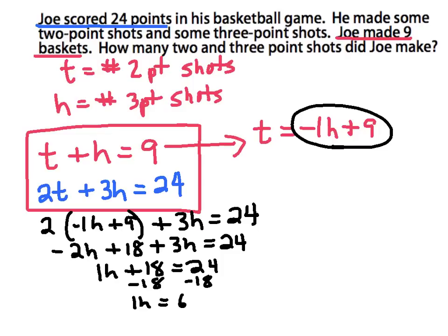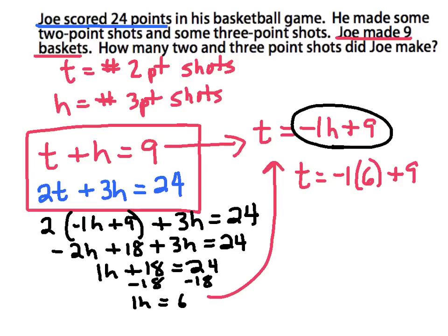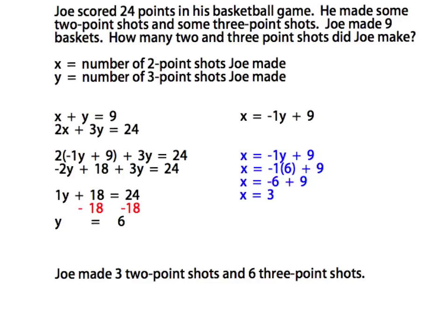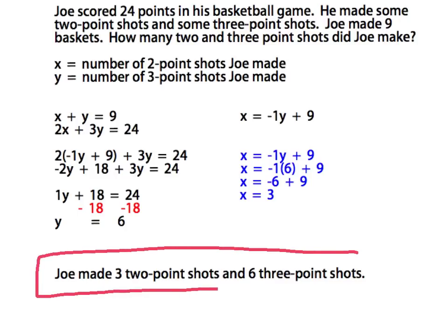Way to go Joe — you're a great 3-point shooter! I can take that value and put it into my other equation to figure out T. T equals negative 1 times 6 plus 9, which is negative 6 plus 9, so T equals 3. Now I'll answer the question in a complete sentence: Joe made 3 two-point shots and 6 three-point shots. Alright guys, good luck!